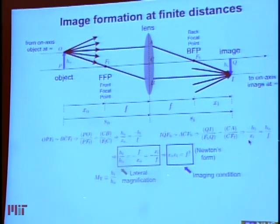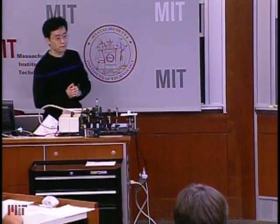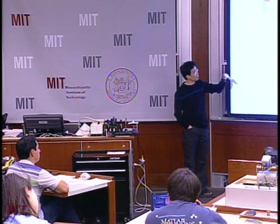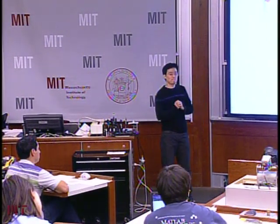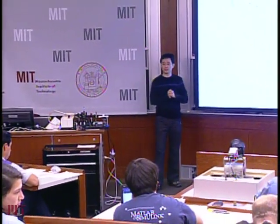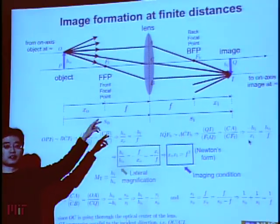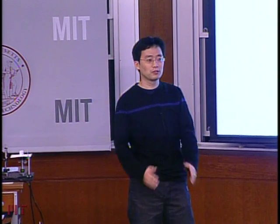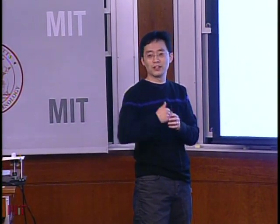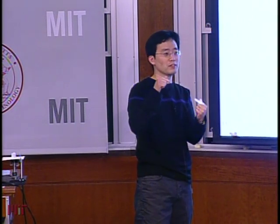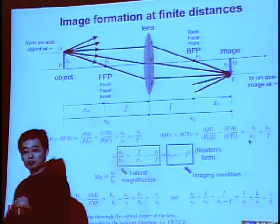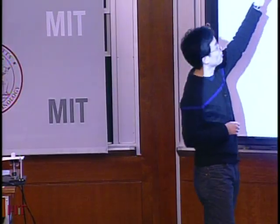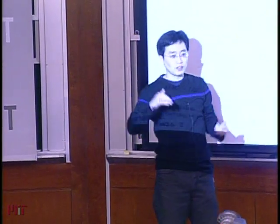We can also draw a ray from the object to the image that passes through the center of the lens — it looks like it passes straight through. At the very center of the lens, the radius of curvature is essentially infinity, so it looks like a flat piece of glass. By Snell's law, the incident and outgoing rays are parallel, and since the medium is the same on both sides and the lens is thin, that ray appears to pass straight through. So you can draw three rays total to find the image.